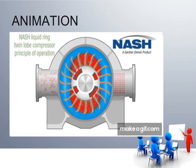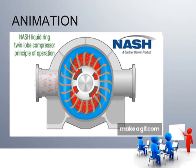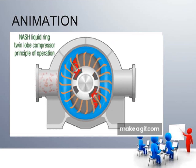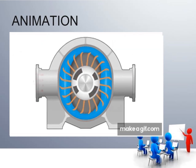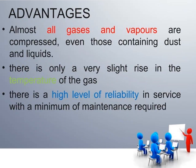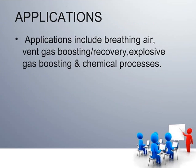In the liquid ring type diagram, the inlet liquid and outlet are shown separately. The advantages include: almost all gases and vapors can be compressed, even those containing dust and liquids; there is only a very slight rise in gas temperature; and there is a high level of reliability with minimum maintenance required. Applications include breathing air, gas boosting and recovery, explosive gas boosting, and chemical processes.